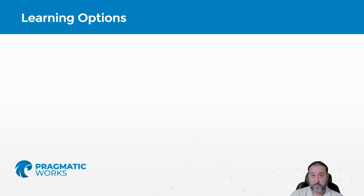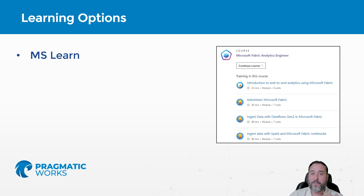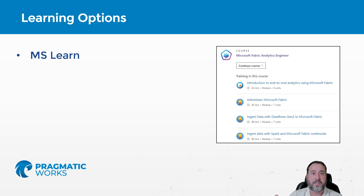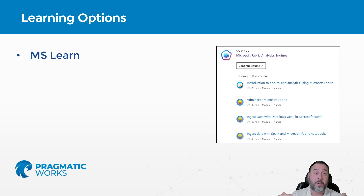So what options do we have? There are a bunch of third-party things out there — we're not going to focus on that. We're just going to think about what's official and available, and of course what we offer here at Pragmatic Works, which I think you're going to find pretty enticing. The first option you'll find if you just type in DP600 is the Microsoft Learn page. There are quite a few links in there, and as part of that there is a little course you can take. It has kind of top-level bubbles.